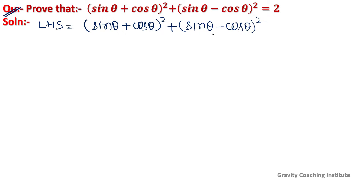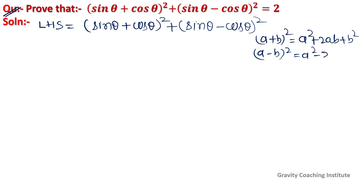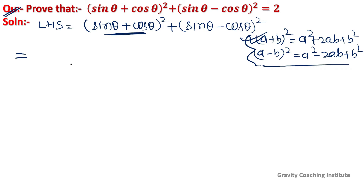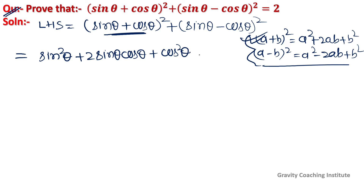We will use the identities: (a + b)² = a² + 2ab + b², and (a - b)² = a² - 2ab + b². Applying the first formula, this becomes sin²θ + 2 sinθ cosθ + cos²θ, plus...